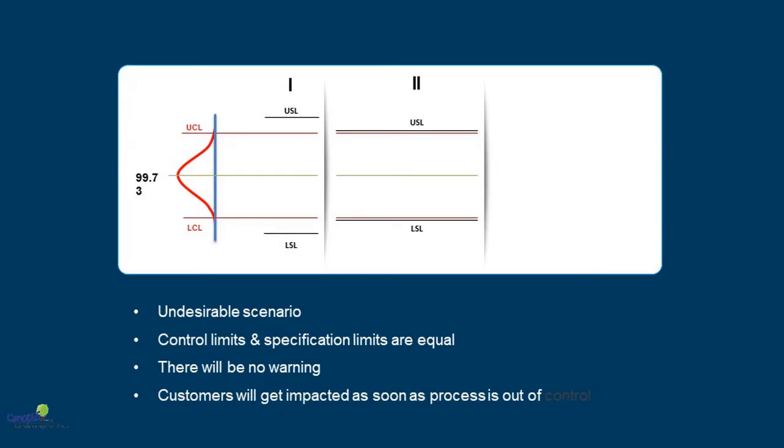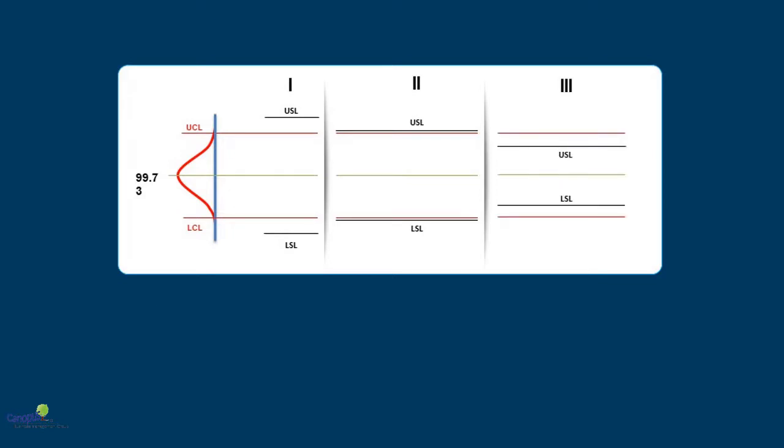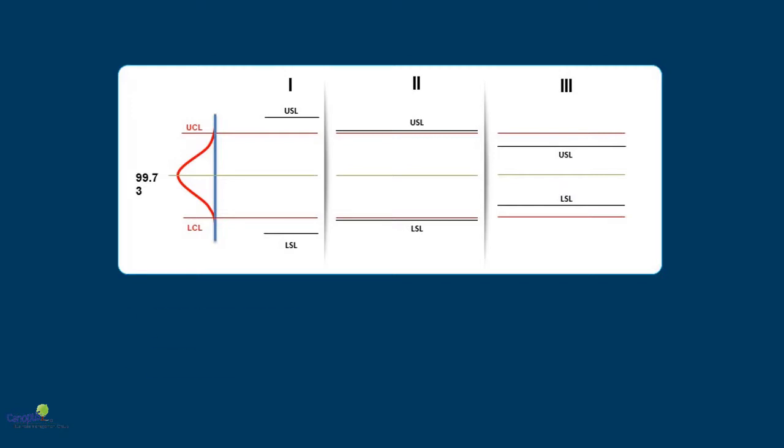The third scenario is one in which the specification limits are much narrower than the control limits. Extremely undesirable scenario because the control limits are lenient than the specification limits. The process may produce many defects which are leading to customer dissatisfaction and you as the owner of the process will not even come to know about. So this is a scenario which is as good as not having a control limit itself. There is no process control that is existent in this scenario.